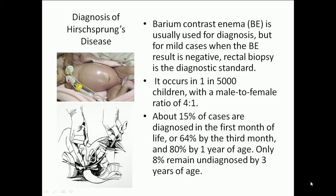Diagnosis of Hirschsprung's disease typically uses a barium contrast enema, but for mild cases when the result is negative, rectal biopsy is the diagnostic standard. It occurs in 1 in 5,000 children with a male-to-female ratio of 4 to 1. About 15% of cases are diagnosed in the first month of life, 64% by the third month, 80% by the first year, and only 8% remain undiagnosed by three years of age.